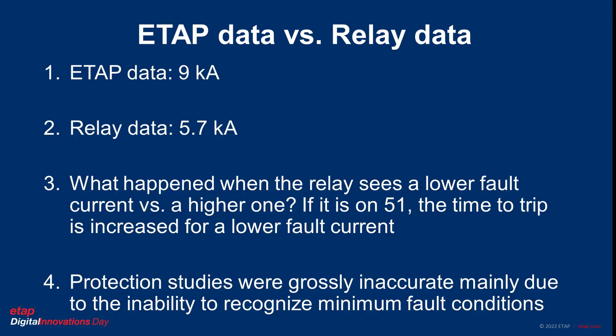Look at the difference between real-life data versus simulated data. ETAP shows 9 kA; the relay shows 5.7 kA. We have a problem, don't we? The designer used the pick-up current around 9 kA and expected the relay to react. However, the fault current was much lower. Depending on how the relay is programmed, it might not trip or trip at a slower time. The main issue here was understanding how to perform studies using minimum and maximum fault current values. ETAP features such as ETAP Star Auto Evaluation and ETAP Arc Flash Auto Evaluation could have helped find those shortcomings.